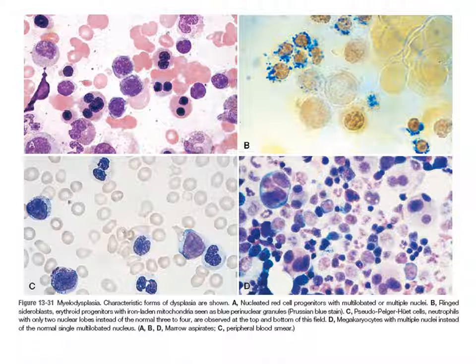This is a picture from your book — I have given you the WHO classification so that you can understand this diagram better. Myelodysplasia: characteristic forms of dysplasia are shown. Picture A — top left — shows nucleated red cell progenitors with multilobated or multiple nuclei. You can see red cell precursors with two nuclei as well as with one nucleus — these are abnormal erythroid precursors.